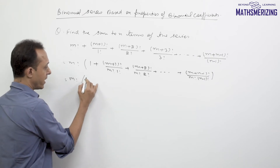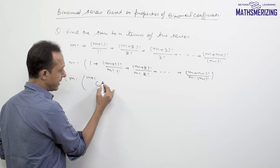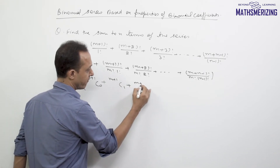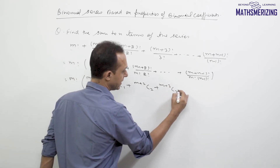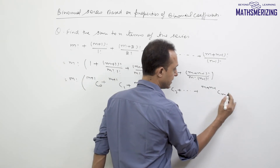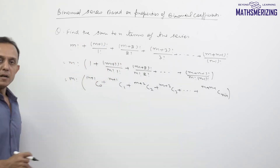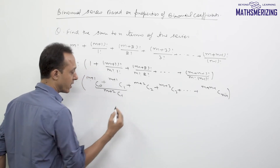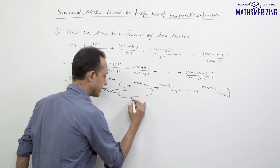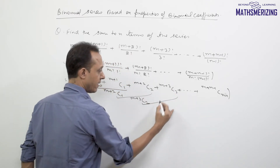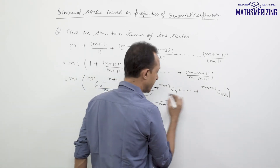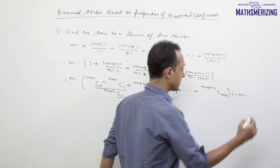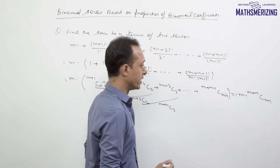I can write 1 as m+1C0, the second term as m+1C1, then m+2C2, m+3C3, and finally m+nCn-1. Now looking at the first two terms, n is the same and r differs by 1, so adding them gives m+2C1. Again n is the same and r differs by 1, giving m+3C2, then m+4C3. Eventually I get factorial(m) times m+nCn-1.